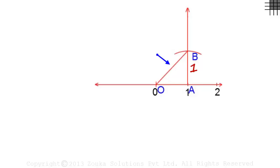This length OB is root 2 units, and that is the length we need on the number line. So we keep the compass on point O, take length OB, and cut an arc like this. That gives us length OC as root 2 units.